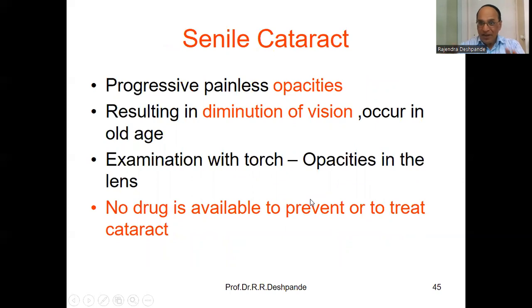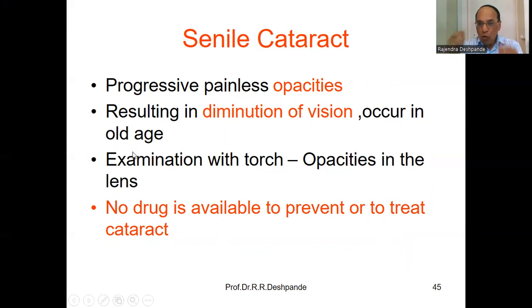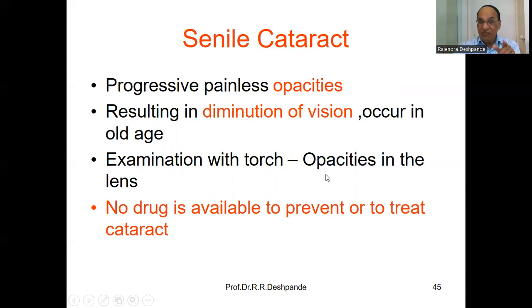The next problem in general medical practice about the eye is senile cataract. Senile because of old age — 40 plus, 50 plus, 60 plus. It is progressive and painless. Cataract means opacity of the lens, resulting in diminution of vision. On examination with a torch, opacity is visible on the lens — there will be a white patch. No drug is available to prevent or treat cataract. This is a modern medicine statement; modern ophthalmology confirms that no drug can prevent or treat cataract.